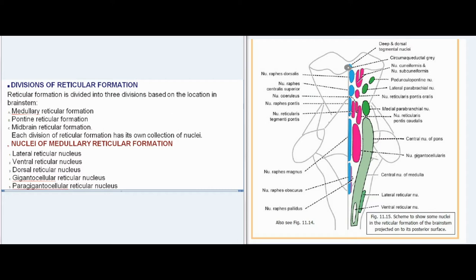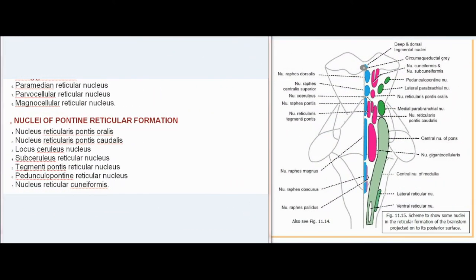Nuclei of medullary reticular formation include: lateral reticular nucleus, ventral reticular nucleus, dorsal reticular nucleus, gigantocellular reticular nucleus, paragigantocellular reticular nucleus, paramedian reticular nucleus, parvocellular reticular nucleus, and magnocellular reticular nucleus. Nuclei of pontine reticular formation include: nucleus reticularis pontis oralis, nucleus reticularis pontis caudalis, locus ceruleus, nucleus subceruleus, reticular nucleus tegmenti pontis, and reticular nucleus pedunculopontine.